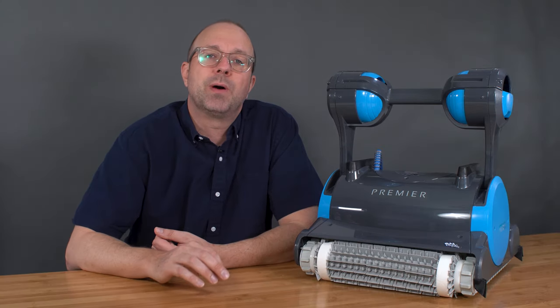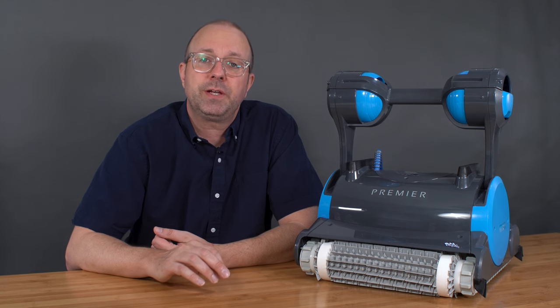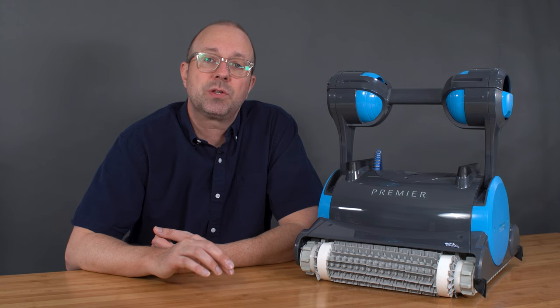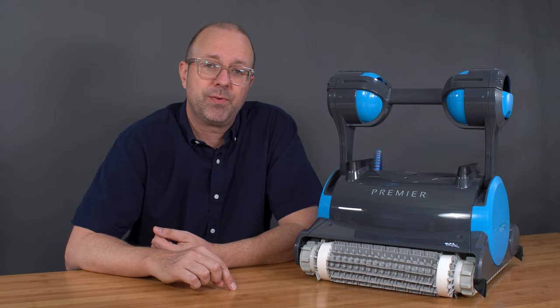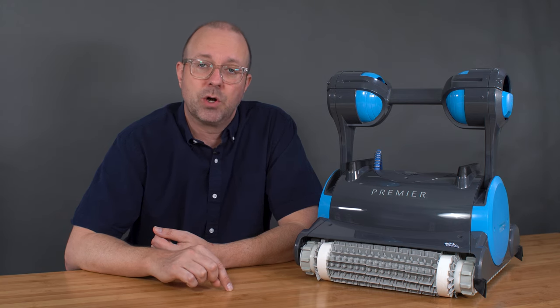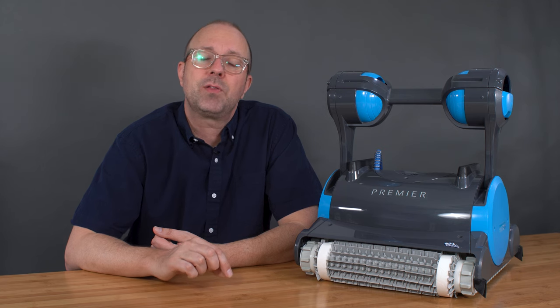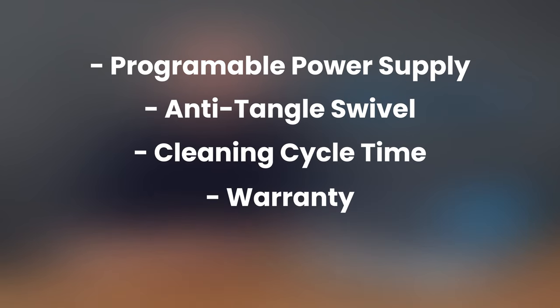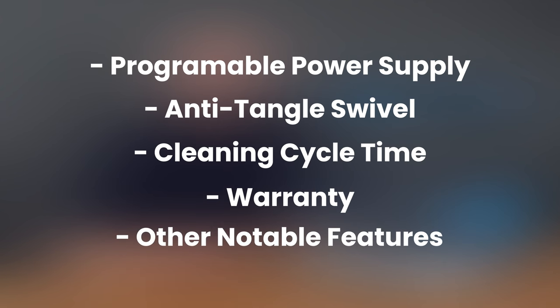As we move through these robots, I will be looking at a few key features to make their differences and advantages clear. In addition to the three main categories—nano filters, waterline cleaning, and no restocking fee—there are some other features I will cover. Those include a programmable power supply, anti-tangle swivel, cleaning cycle time, warranty, and then any extra features that are worth noting. So let's get started.